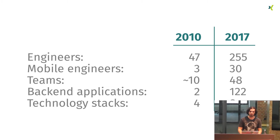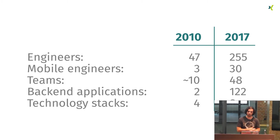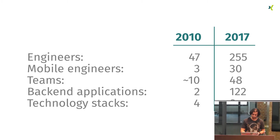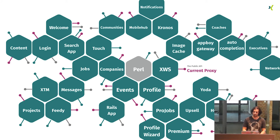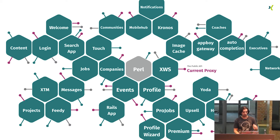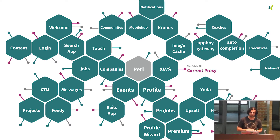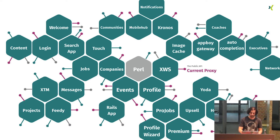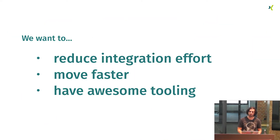The reason why we are doing this is basically because the company is growing and there is a clear tendency that this will continue in the following years. Not only the staff is growing, also the amount of applications. All of these small lines you are seeing — the purple, the greenish, and the gray ones — are different kinds of endpoints. So if you are working on one application, there could be chances that you need to maintain three different kinds of endpoints. We want to reduce the integration effort, move faster, and have awesome tooling.